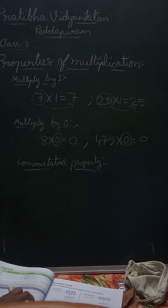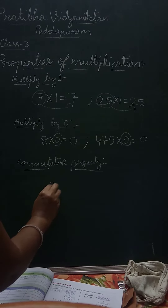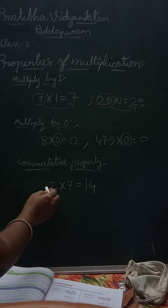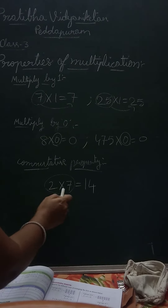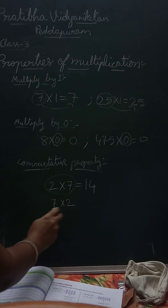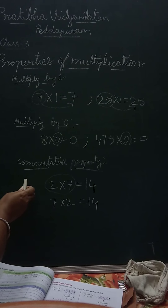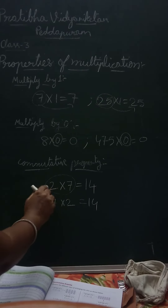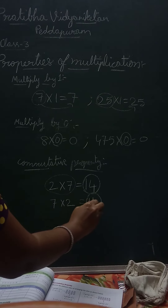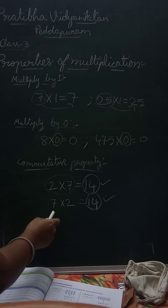The third property is the commutative property. Suppose we take 2 into 7, that is 14. Now we change the order of these two factors: 7 into 2, which is also 14. So changing the order of factors does not change the product — we still get the same answer 14. We can change the order of factors and we get the same product.